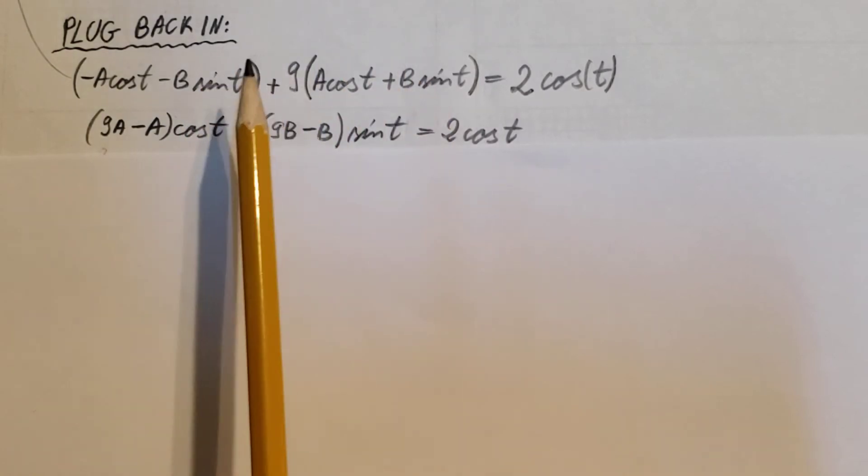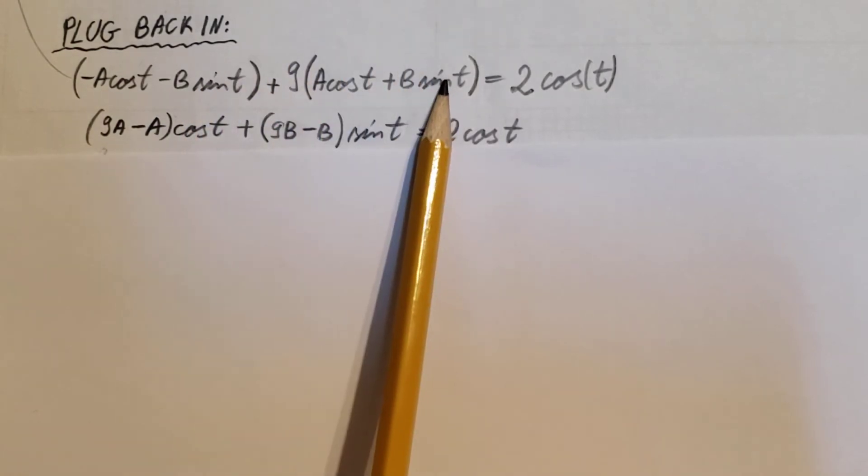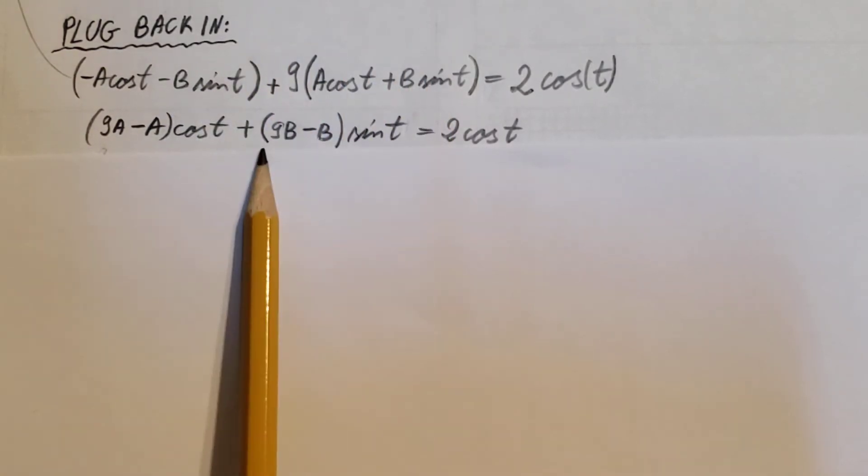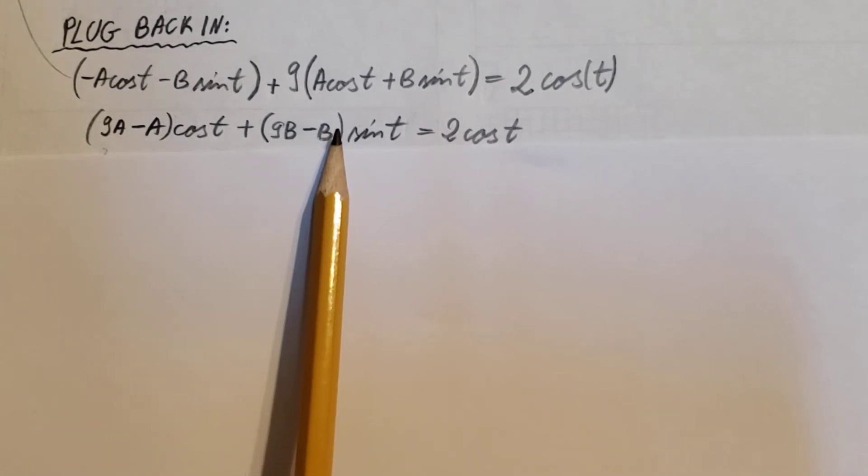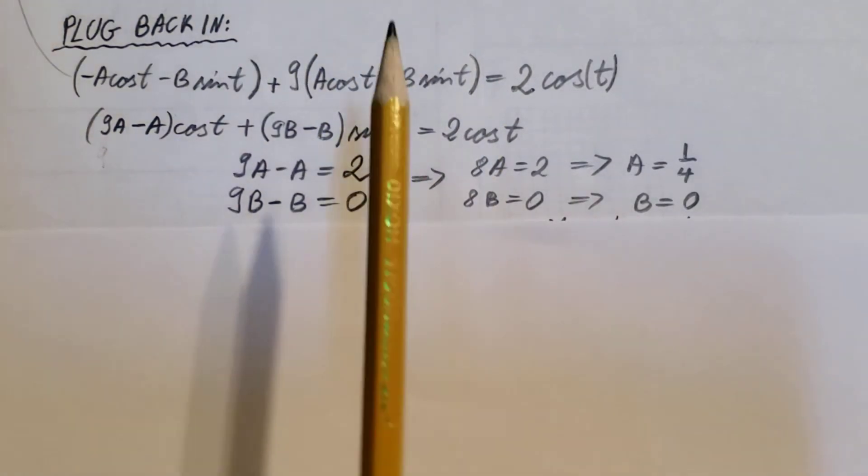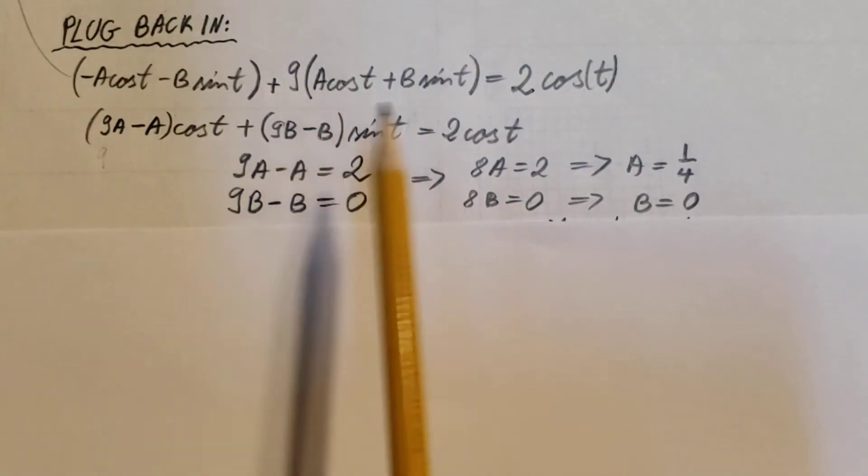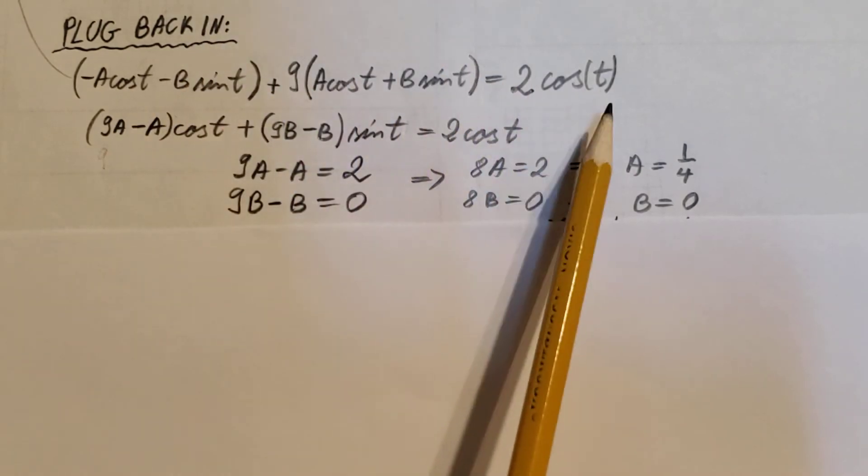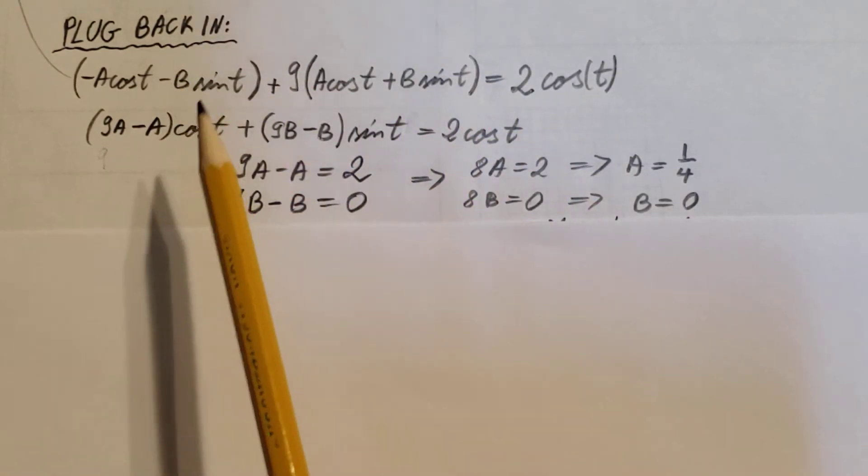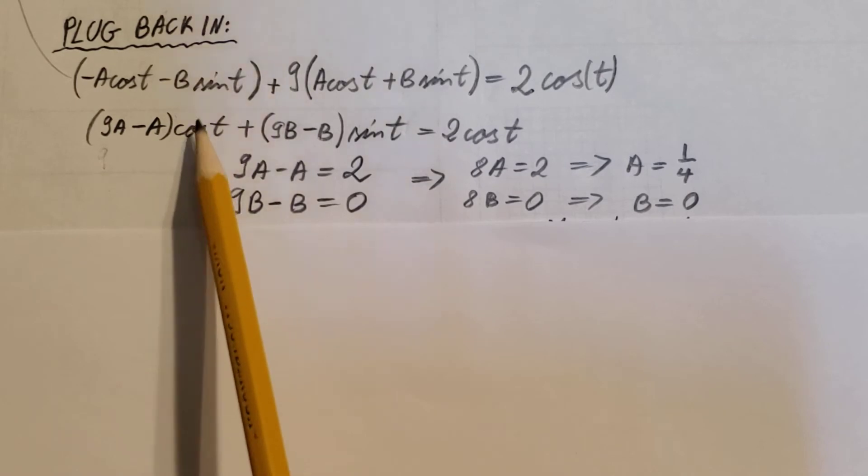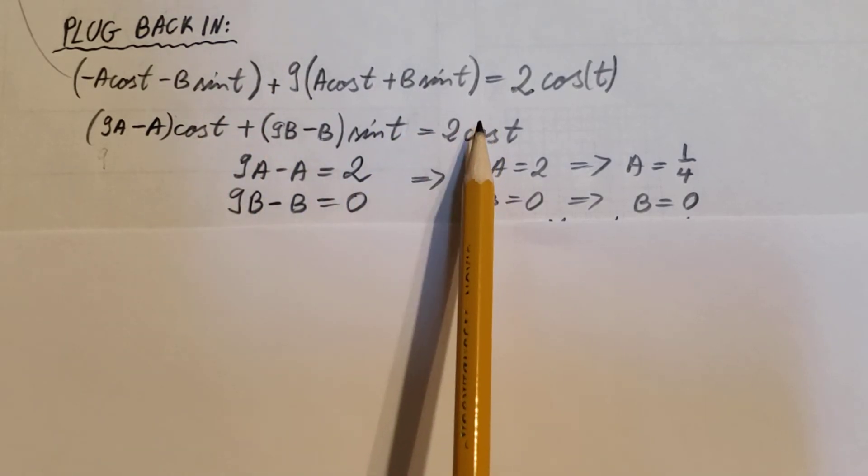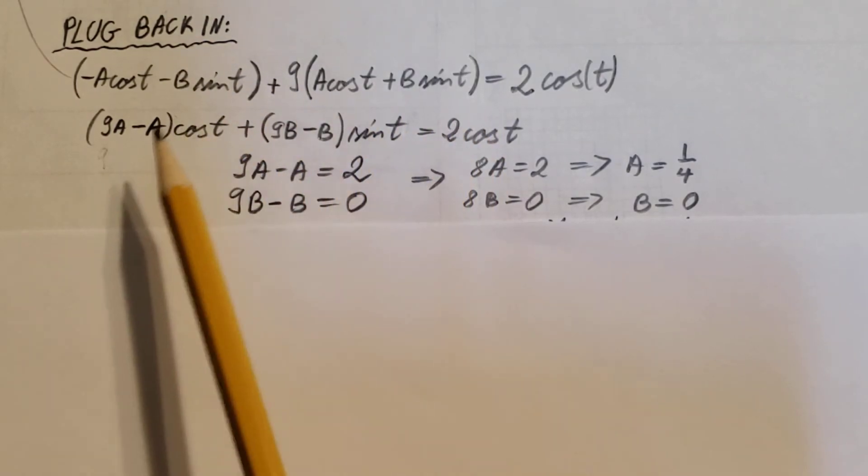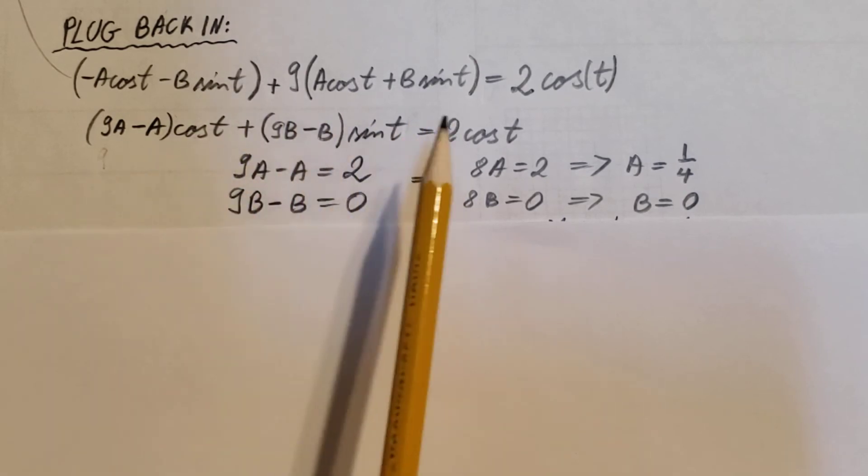From the two sines, I'm gonna factor out the sine t and the two coefficients will be left behind: 9b minus b. At this point, we're only gonna simply compare what we have on the left-hand side to what we have on the right-hand side.